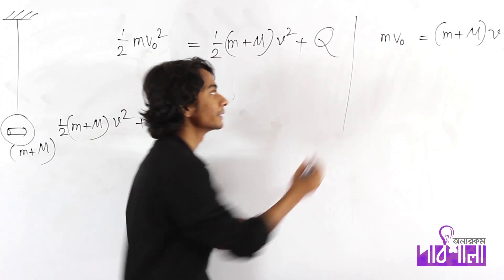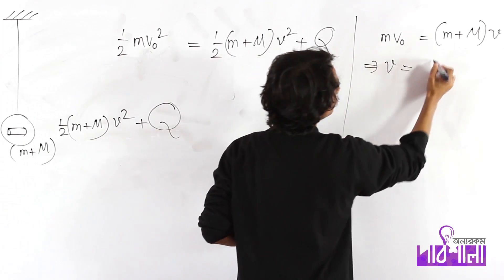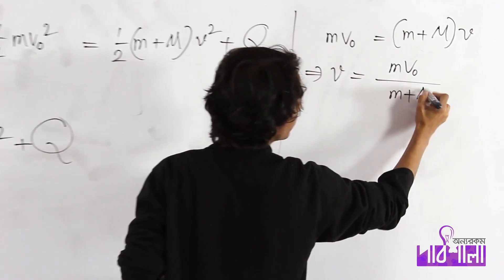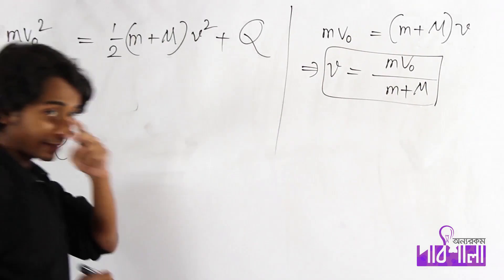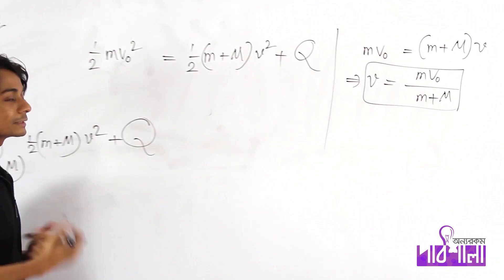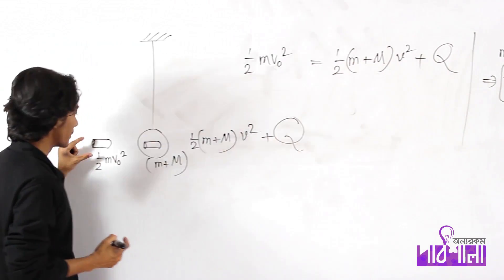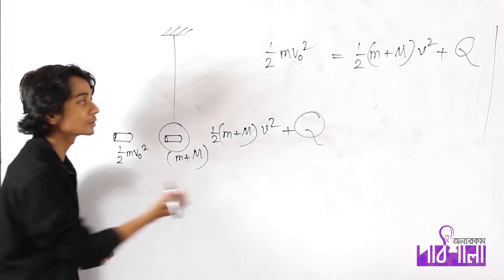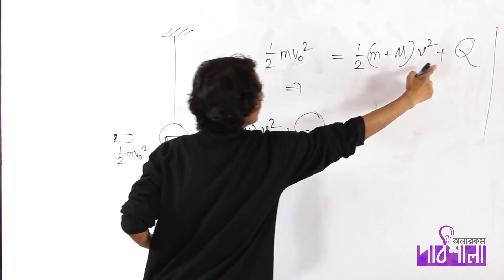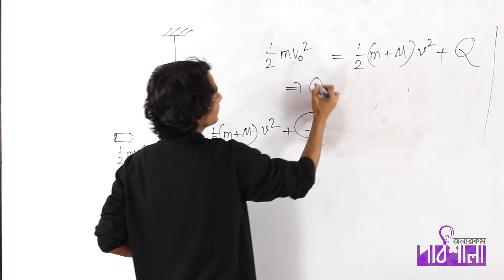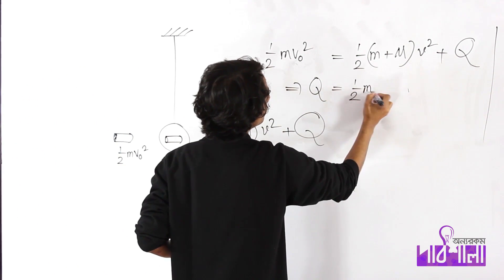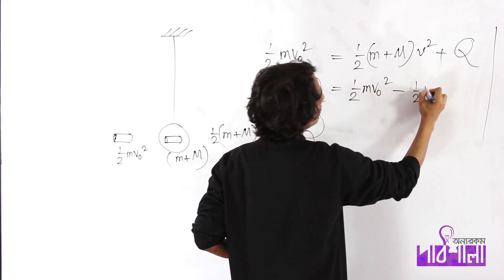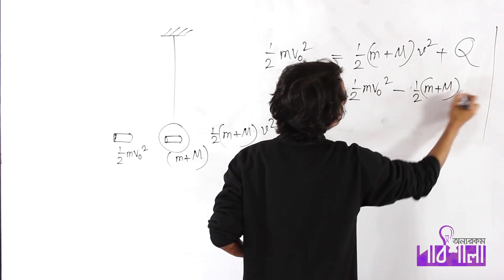So exactly, look — the answer is M V0 divided by M plus capital M. That will be a little bit more. This will be a little bit easier. If we don't have to hide a little bit more, following our bullets, we'll see how we can find both the bullets. What will we put away with Q? Let's take a break. Half M V0 squared minus half M plus capital M, V0 squared.